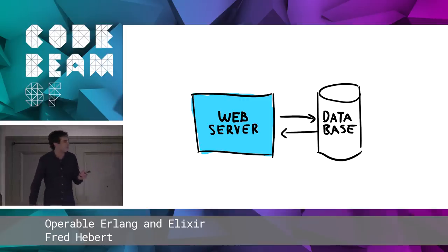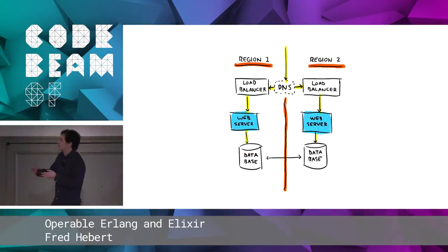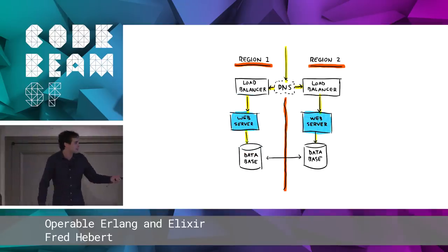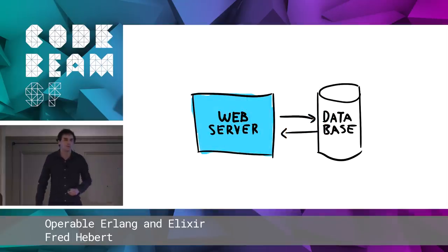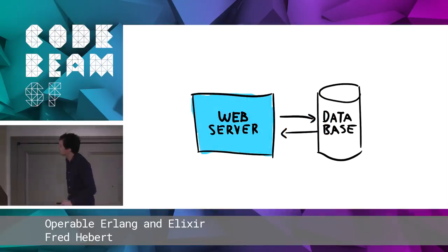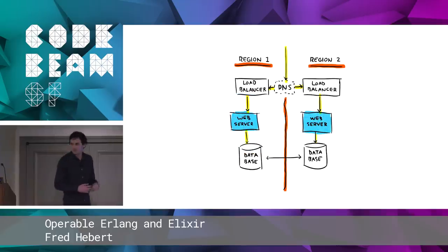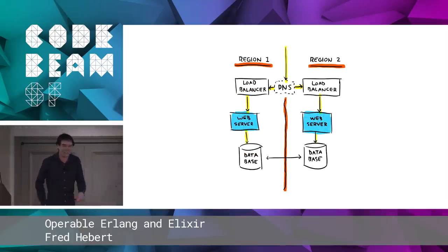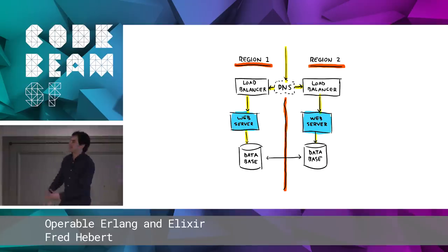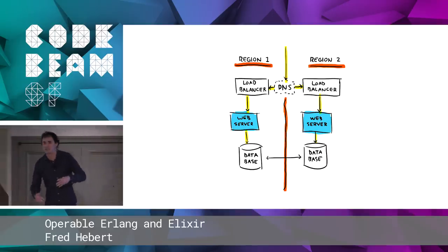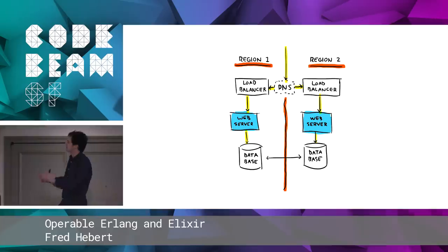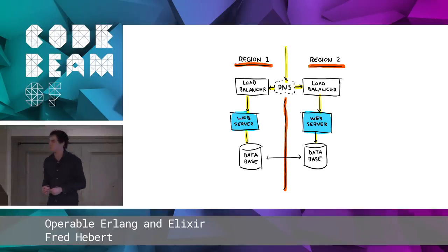There's a requirement that when we have more people and more usage, we require more complexity. There's no way that WhatsApp only has one big machine with a label 'web server' on top of it. When you get into redundant regions, you have to care about stuff like DNS being done differently, load balancers — and this is still a simplified diagram but it gets a lot more complex.